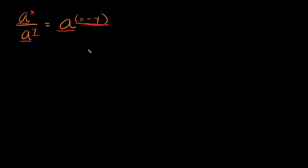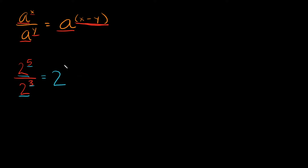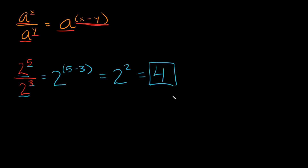I'm going to do some positive and negative examples so it starts making more sense. If I had 2 to the 5th divided by 2 to the 3rd, we have the same base, which is 2. So this equals 2, and we subtract the exponents: 5 minus 3. That gives us 2 squared, which is 2 times 2, equal to positive 4.